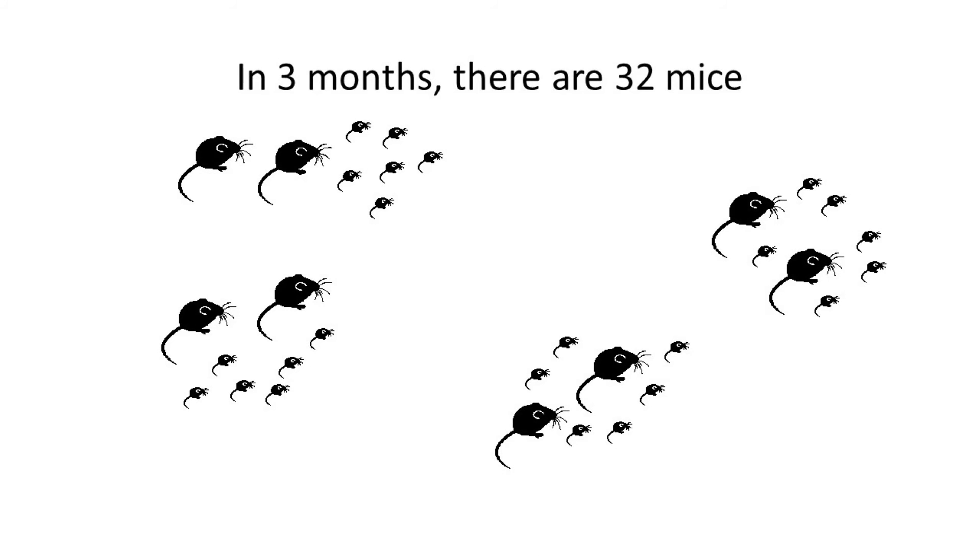Three months after the first couple of mice moved in, you may have 32 mice. Trapping a mouse here and there is not solving the problem. Studies have shown that a mouse travels 10 to 30 feet in all directions during their daily explorations. You may need to think about mice control in three dimensions.